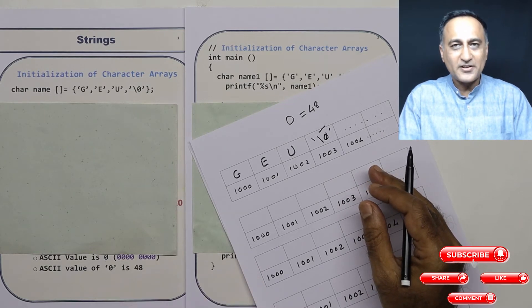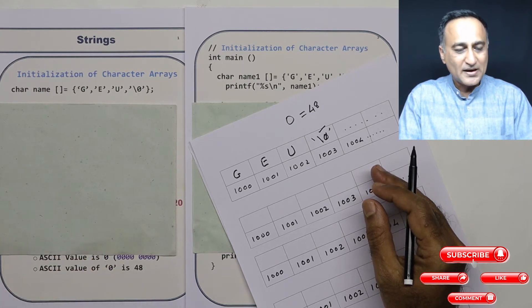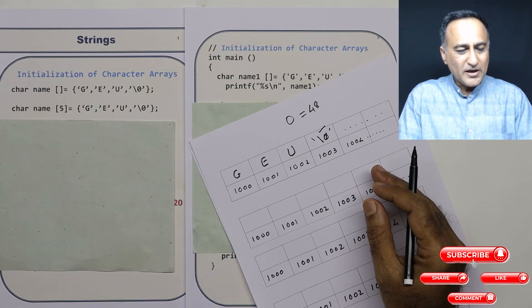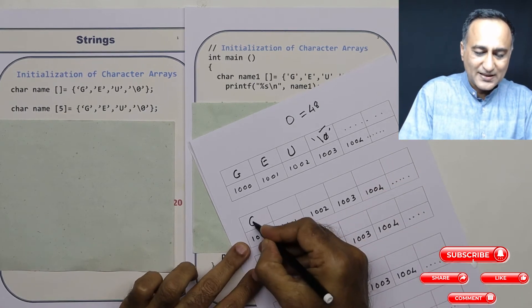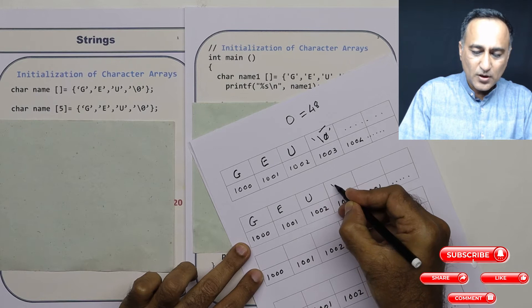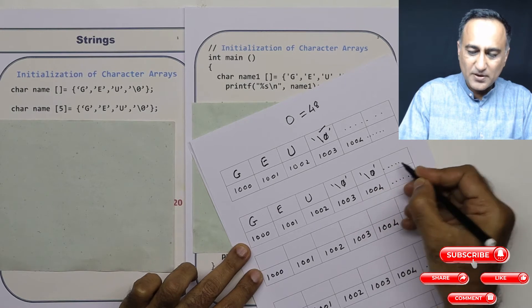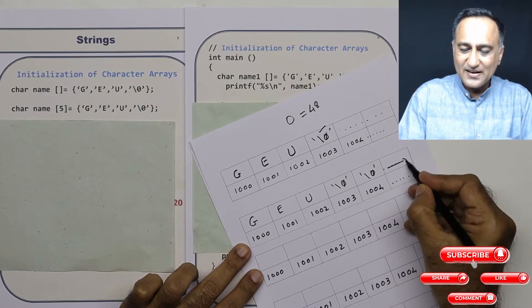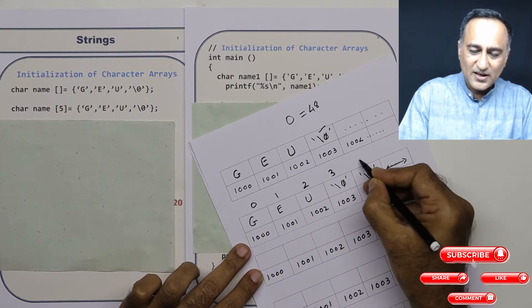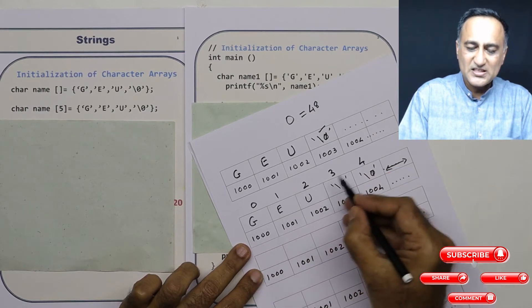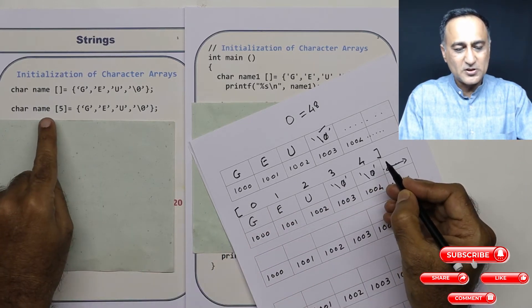In the demo video following this one, you will get a better idea of what kind of garbage output you may get. Here, I have given it a dimension of five, so it's going to look like: 'g', 'e', 'u', then the null character, and after that all remaining positions will be nulls — C automatically puts nulls for those. So zero, one, two, three, and four: totally five positions. This is the beginning and ending of your array based on this declaration.